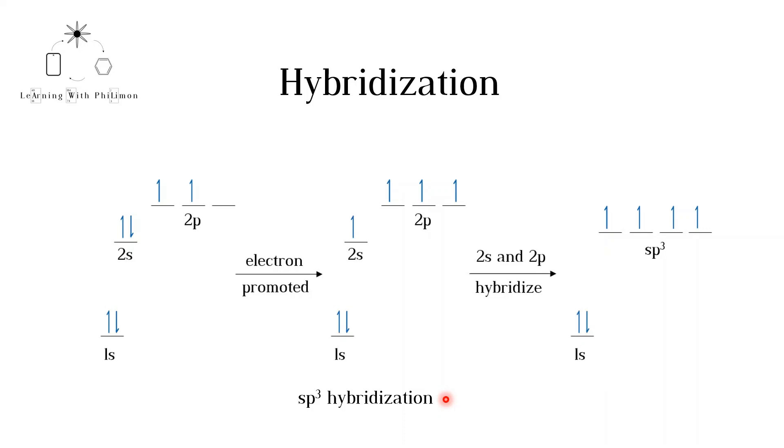In order to explain the bonding, we need to look at hybridization. In this process an electron is promoted from the 2s orbital of a carbon atom to the 2p orbital. The 2s and the 2p orbitals then combine to form four new hybrid orbitals called sp3. Note that these new hybrid orbitals have the same energy, which is between that of the 2p and the 2s orbitals.